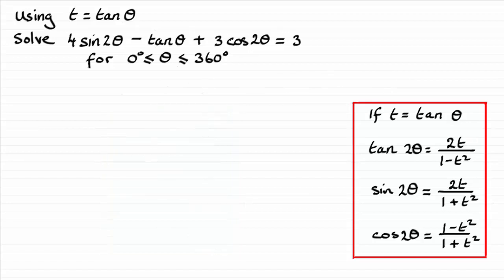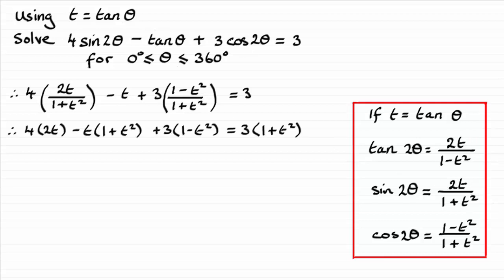And so what we do now is just substitute for sine 2θ, tan θ, and cosine 2θ directly into this equation in terms of t. That gives us this equation here. And all I need to do now is just get rid of the fraction, the 1 plus t squared, by multiplying throughout each term by 1 plus t squared and that will give us this line here.